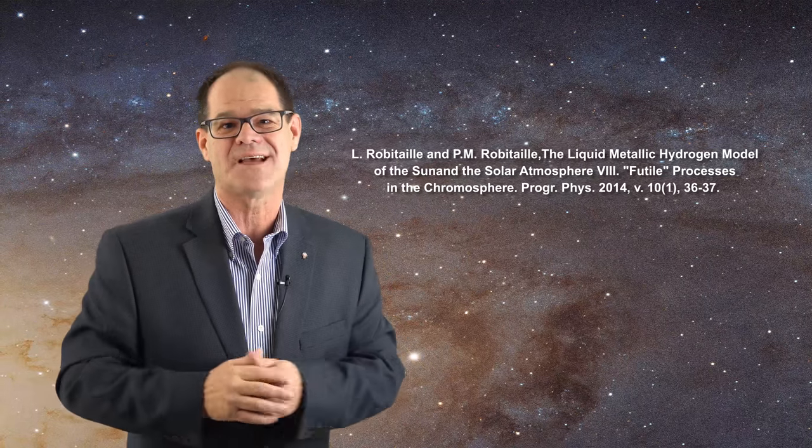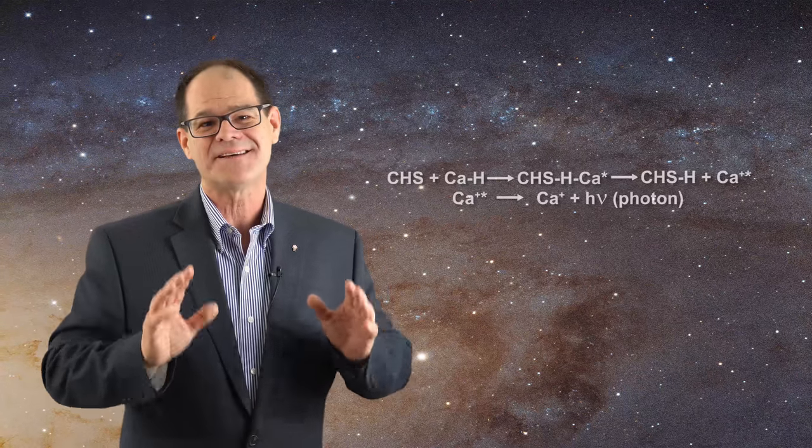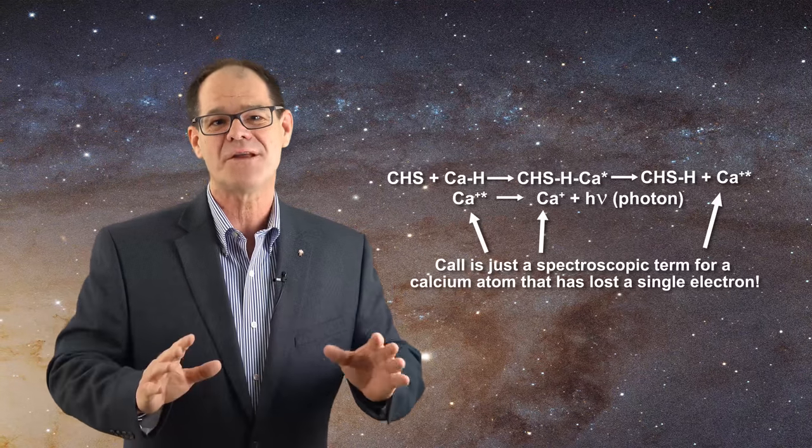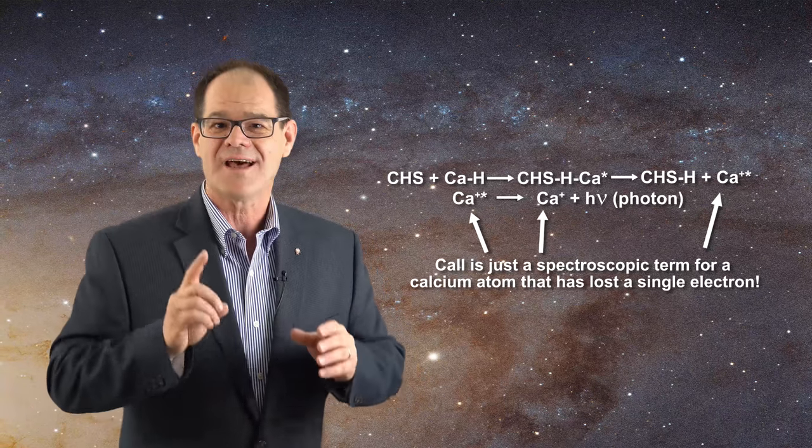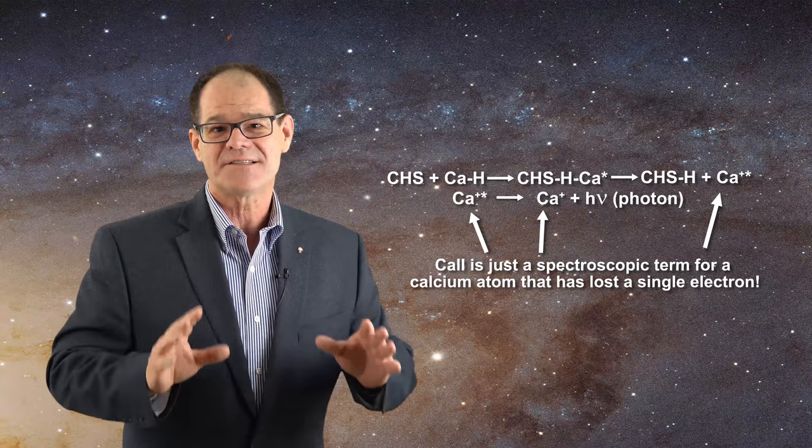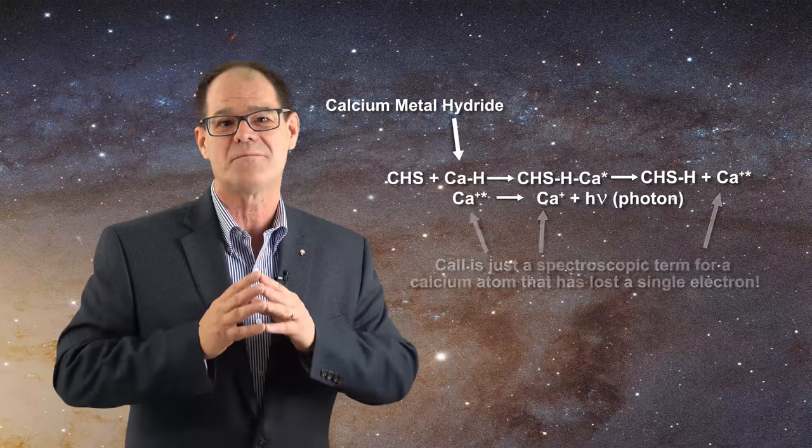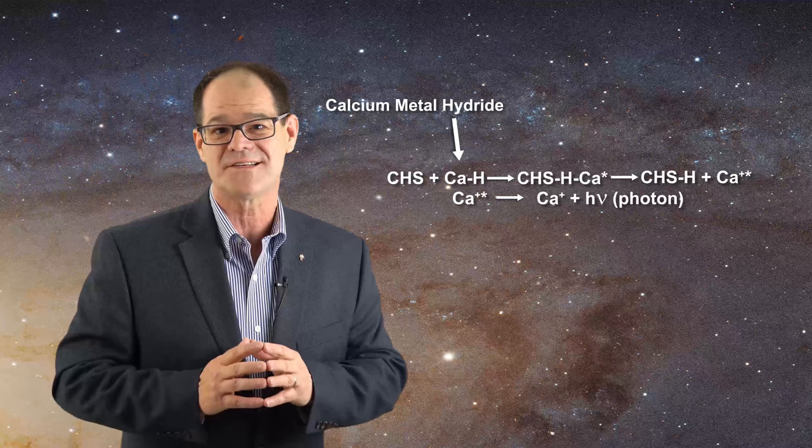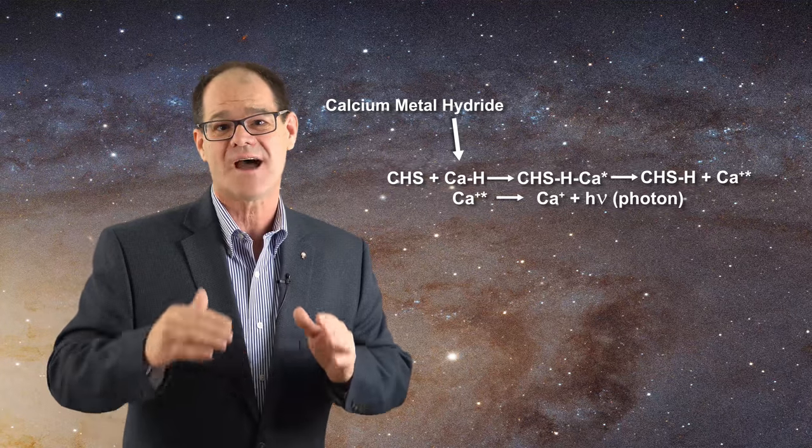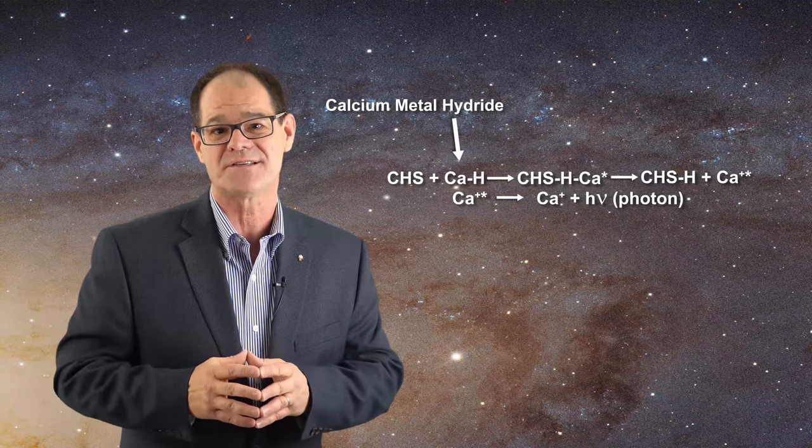Hopefully we'll return to these ideas in future videos, but for now remember calcium 2 emission lines are very powerful in the chromosphere with increasing elevation. The likely reason is that calcium metal hydride is one of the most favored molecules for facilitating hydrogen condensation reactions as the height above the photosphere increases.